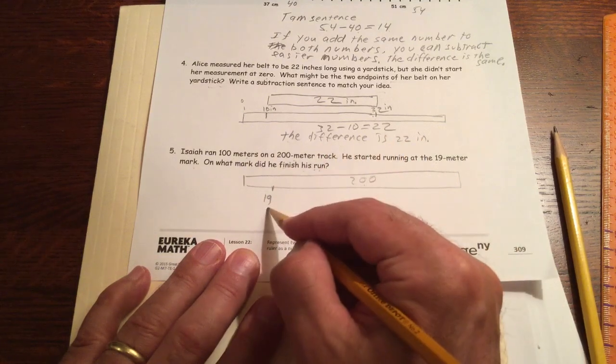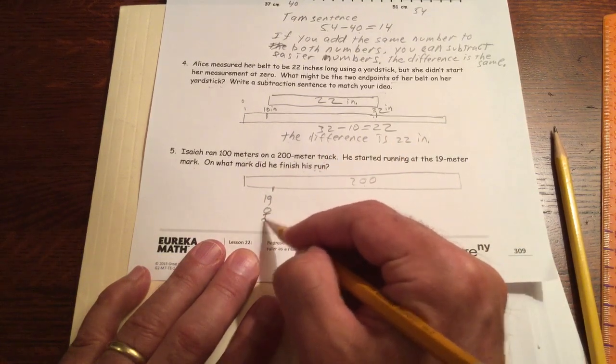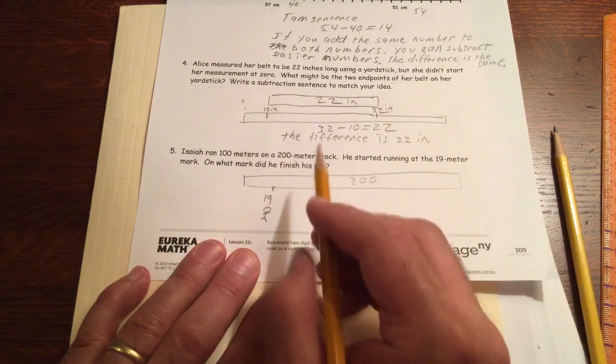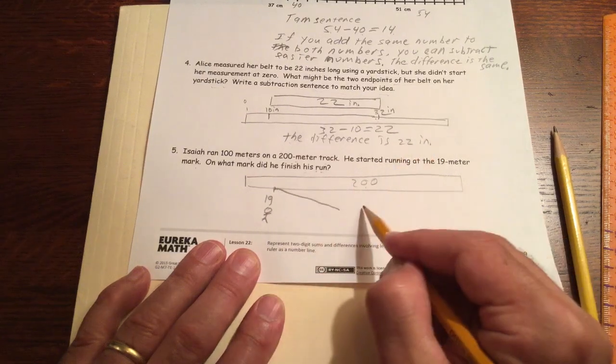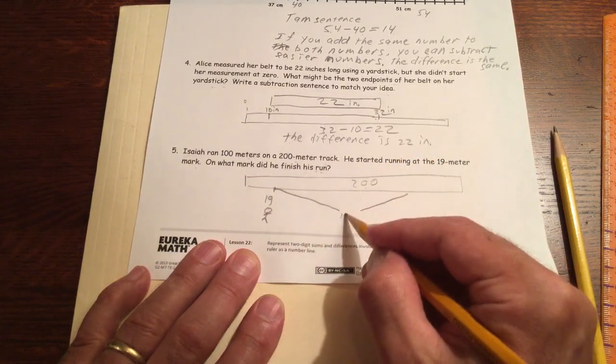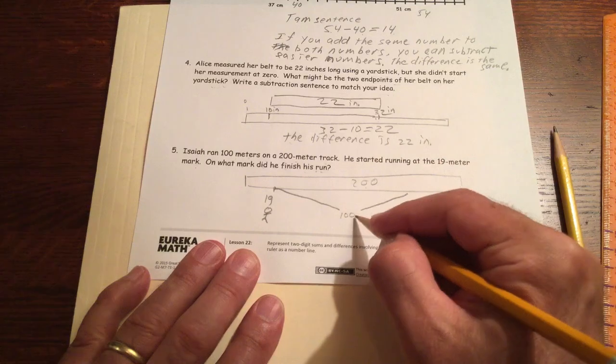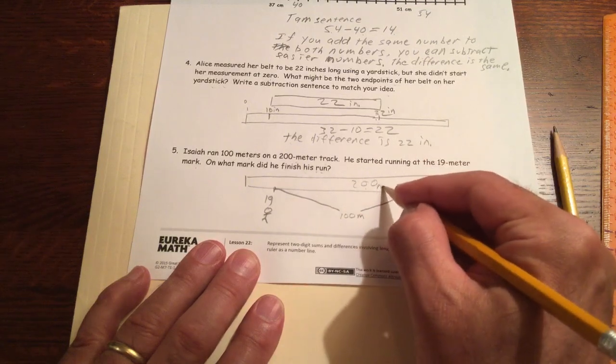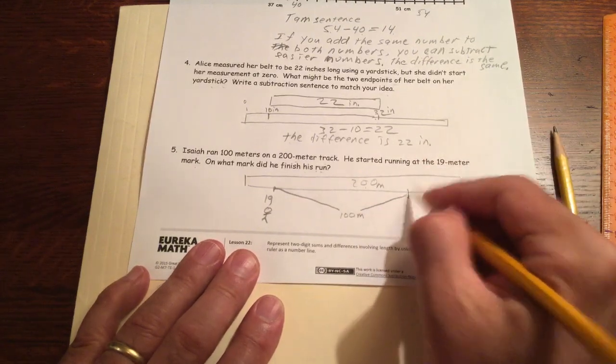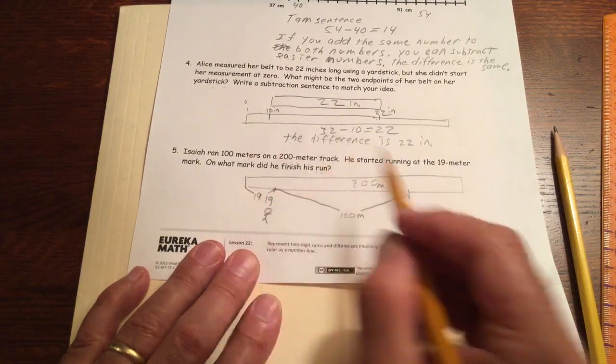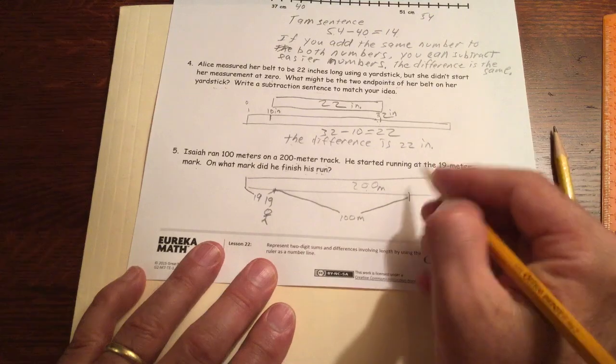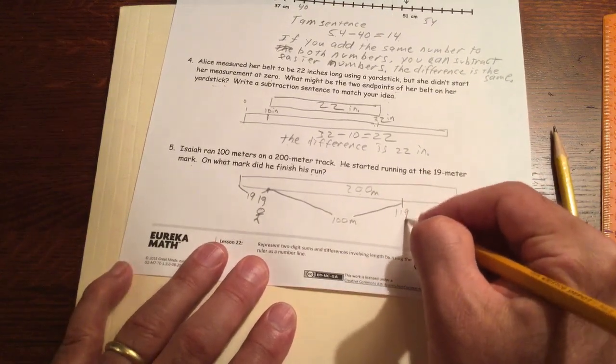He's running. And he runs, let's call this 100 meters. So we have 19. We have 100. So this has to be 119.